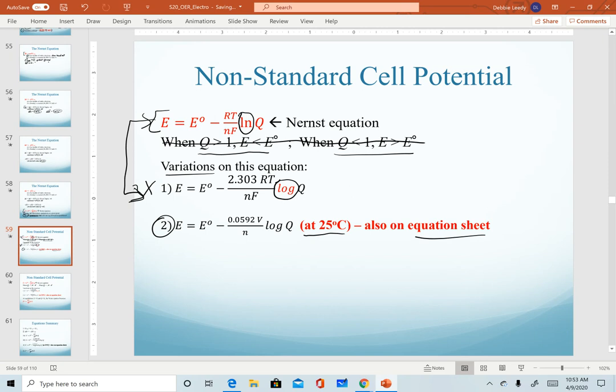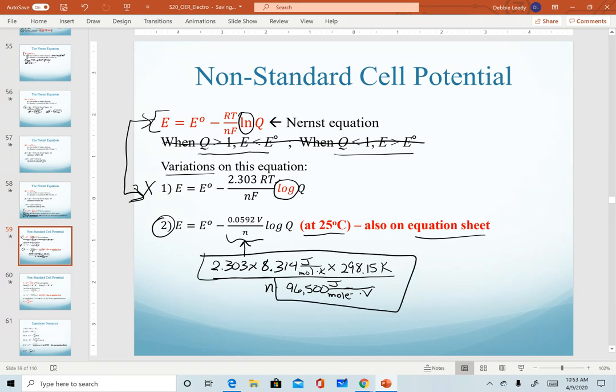So where all of this comes from, realize that this quantity here is a result of taking our value of 2.303 times our R value. We're using the joules quantity because we are using Faraday's constant that has joules in it. And then if we're measuring at 25 degrees Celsius, we have a constant temperature of 298.15, and that's over n times our Faraday constant. So if you take all of these numerical quantities and calculate that, that's where the 0.0592 volts comes from.